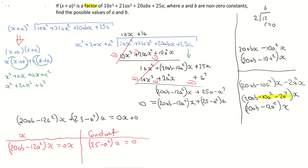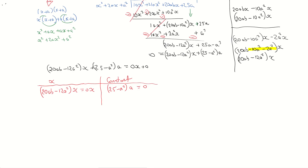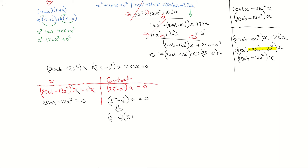Now we just need to solve for a and b. On the x equation, I can cancel out the x's common to both sides, giving me 20ab minus 12a squared equals 0. That's a bit difficult with two variables, so let's come to the constants equation. 25 is the same as 5 squared, so 5 squared minus a squared times a equals 0. That's the difference of two squares: 5 minus a times 5 plus a, all multiplied by a, equals 0.